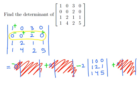And so cleaning this up, we find our original determinant is equal to negative 2 times the determinant of 1, 0, 0, 1, 2, 1, 1, 4, 5.